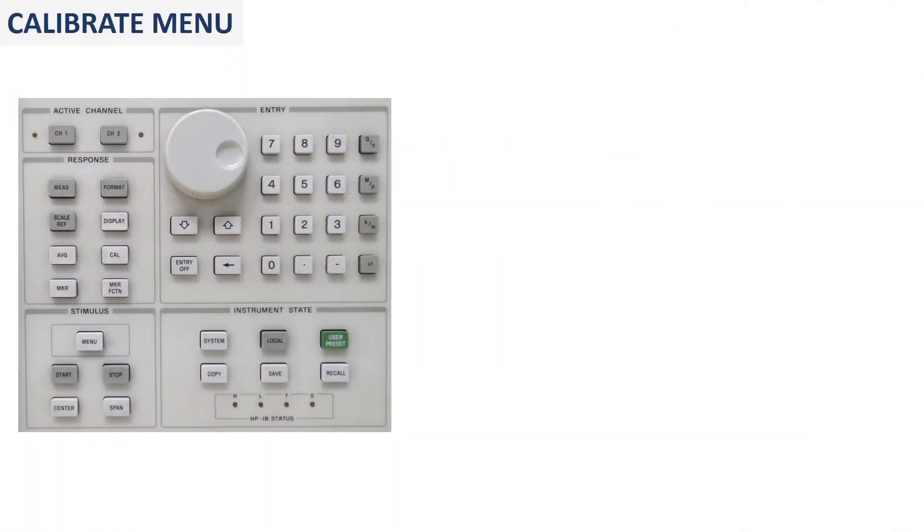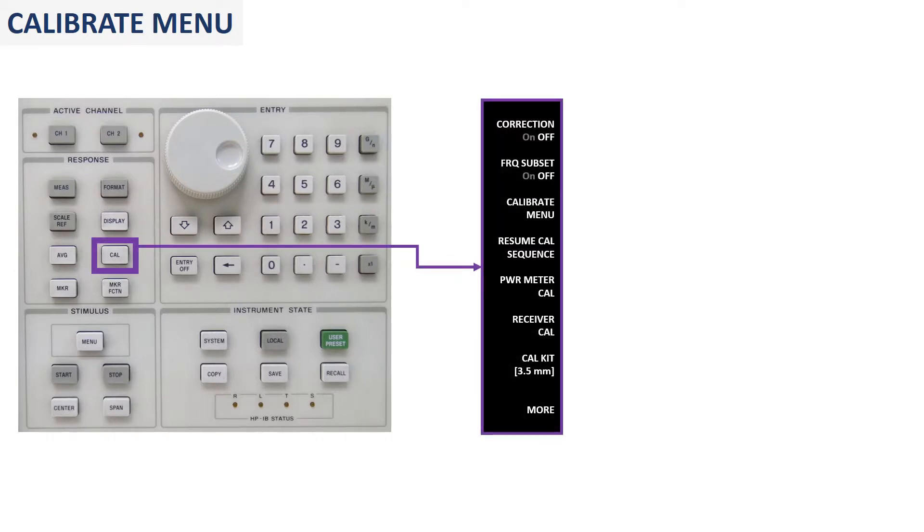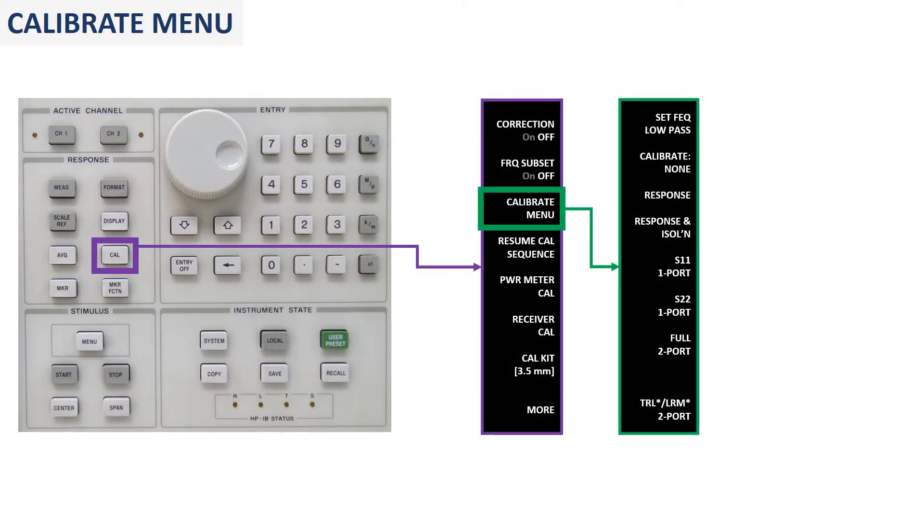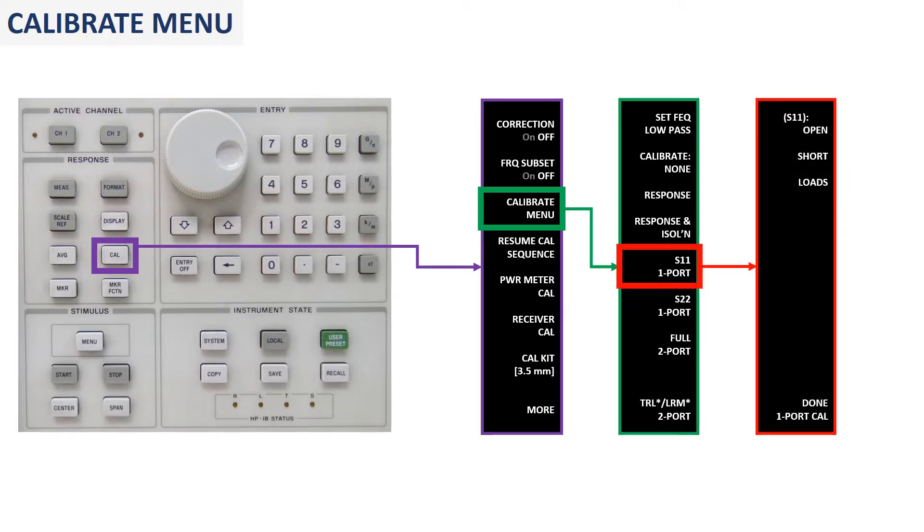Next step. I press the Calibration key and then the soft key Calibrate Menu. Then we specify S1,1, one port, and the one port calibration menu is on.